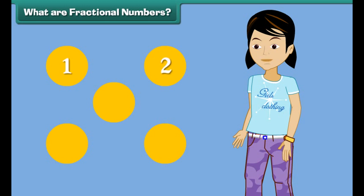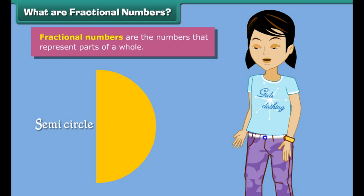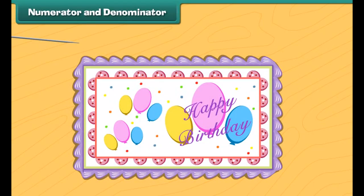Can you count how many circles are here? One, two, three, four, five. But what if there was just half part of a circle? How would we count it? Well, we will use fractions. Fractional numbers are the numbers that represent parts of a whole.